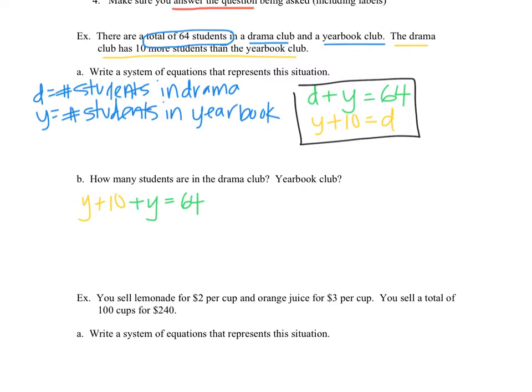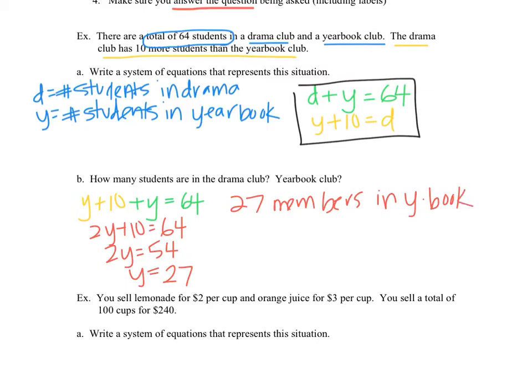Now we just solve, and you get 2Y plus 10 equals 64. And so Y is equal to 27. So there are 27 members in yearbook.